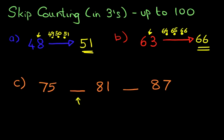And we know that we are going to be skip counting in threes. So let's start with our first number, 75. What we're going to do is draw an arrow to the blank because we're going to fill the blank.